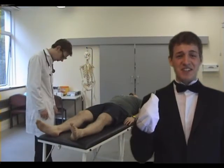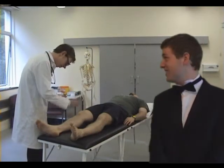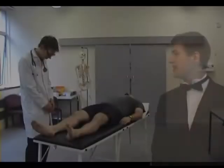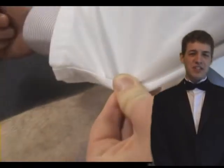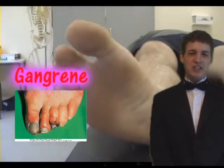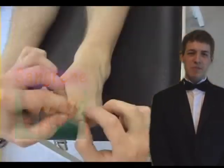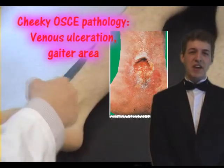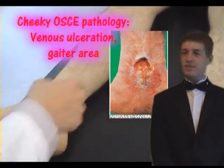Don't forget to note any amputations. Note the colour of the patient's limbs and check for ulcers and gangrene. Check pressure points such as the heel, between the toes and the gaiter area for venous ulceration.